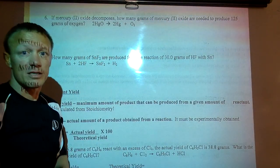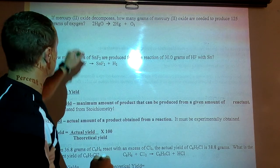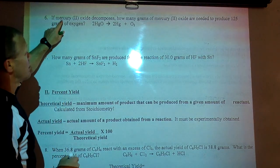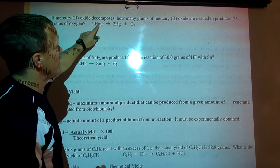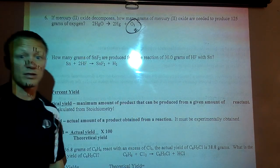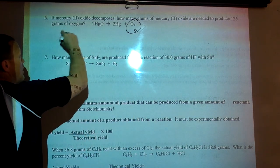So this question is going to be a grams to grams problem. Again it's number six in your notes. It's you have 125 grams of oxygen produced. So it's starting with grams of oxygen. It's giving us 125 grams of oxygen. So we're going to start with that.